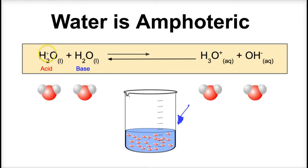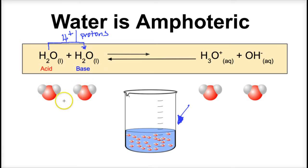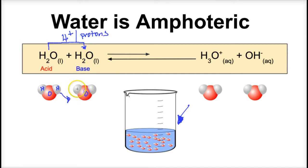Some of these water molecules are going to end up donating H+ ions or protons to other water molecules. So some of the water molecules in this beaker are going to act as an acid and donate H+, and some of them are going to act as a base and accept H+. Here's our water molecule with oxygen and two hydrogens. If some molecules donate an H+, that H+ gets donated to the other water molecule right next to it.